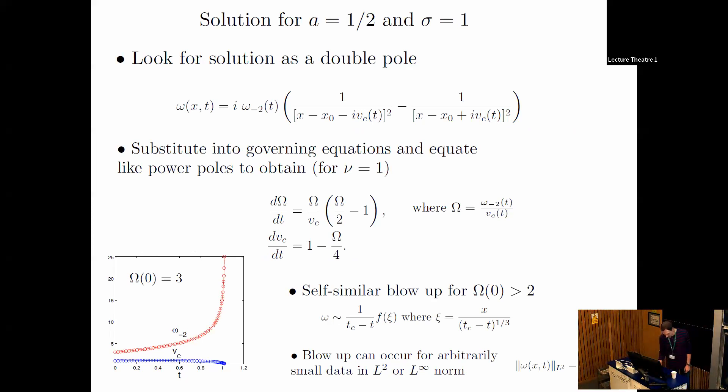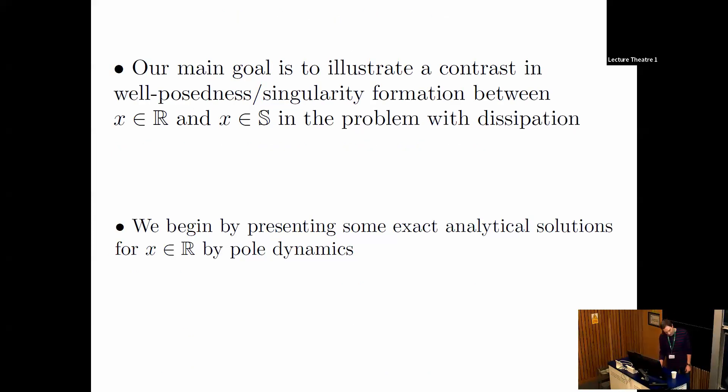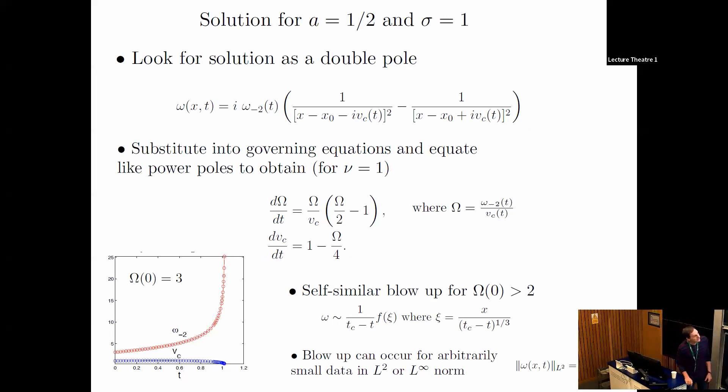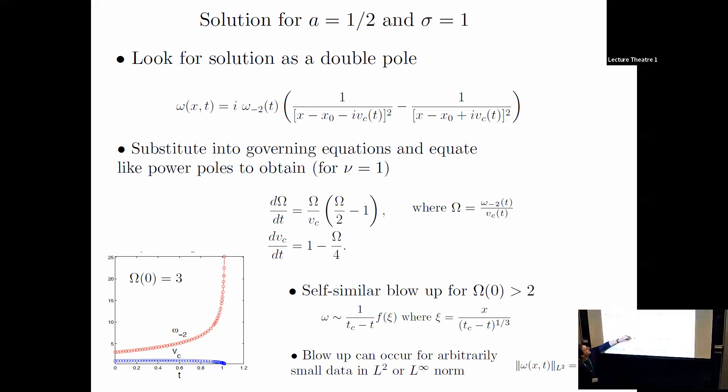The exact analytical solutions use a method called pole dynamics. Here's an example of one of the simplest ones, for sigma equals one, so some dissipation. You look for a solution as a sum of poles, some in the upper half plane, some in the lower half plane. That usually doesn't work—it needs special parameters because your collection of poles needs to close. Nonlinearities will generate other poles and logs because we integrate to get u. Those need to cancel out.